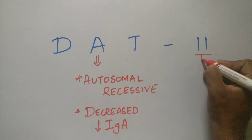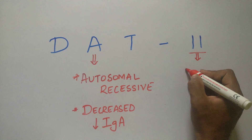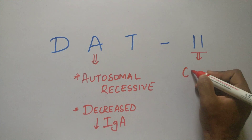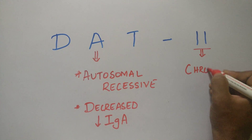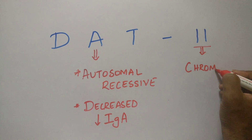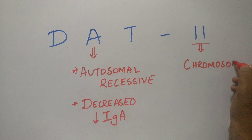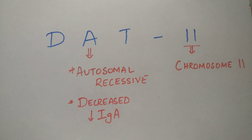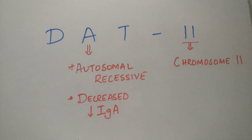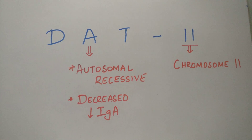Leaven — leaven stands for chromosome number 11. Therefore, in Ataxia Telangiectasia, the 11th chromosome is involved.